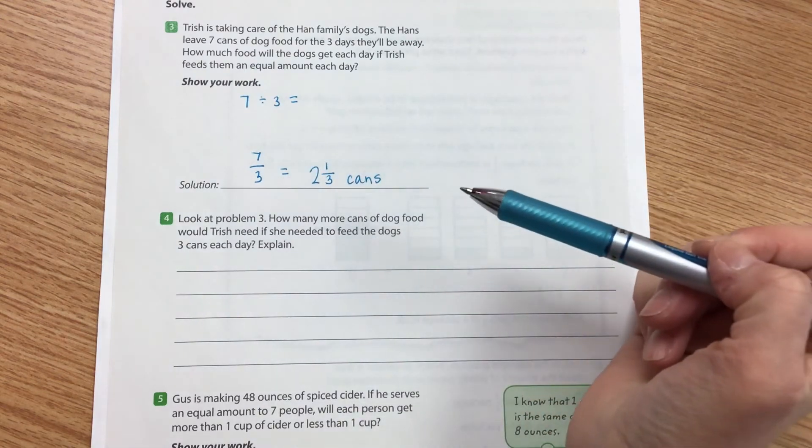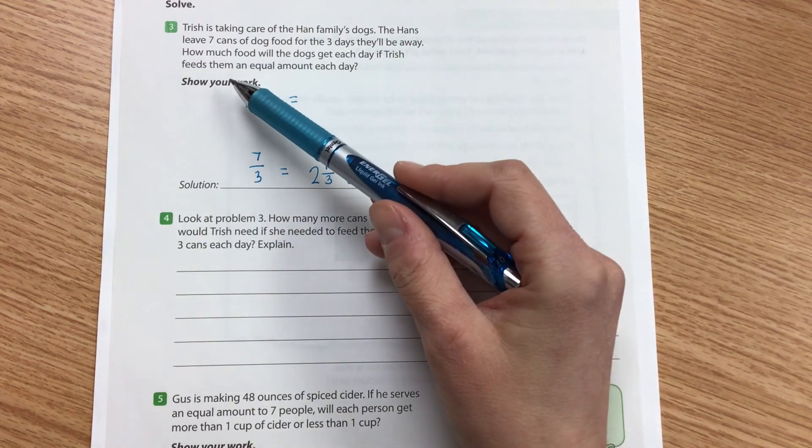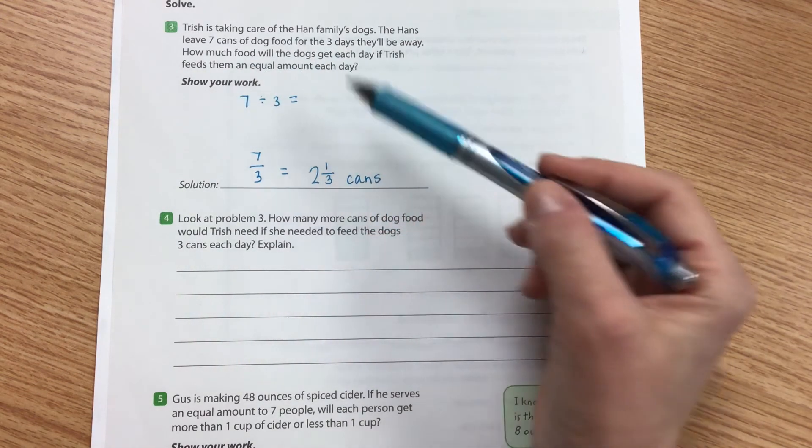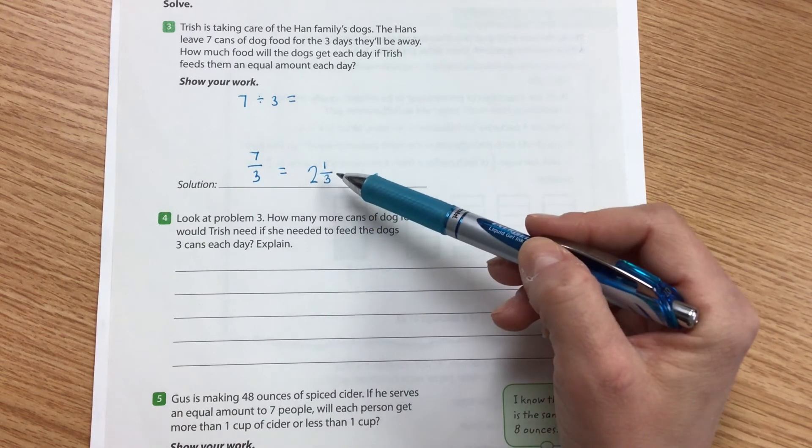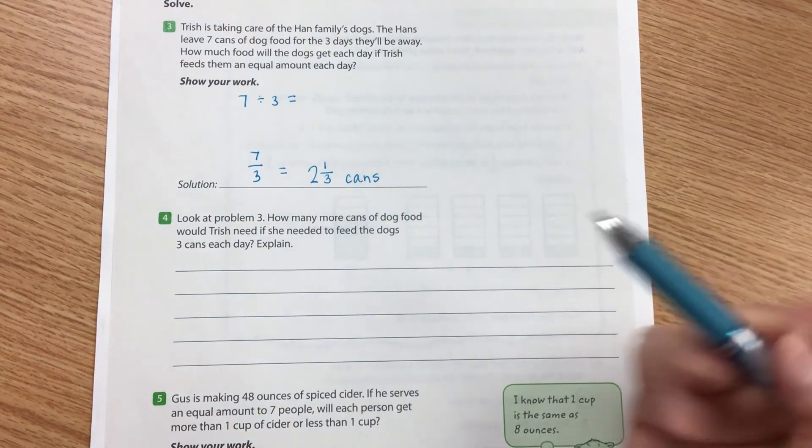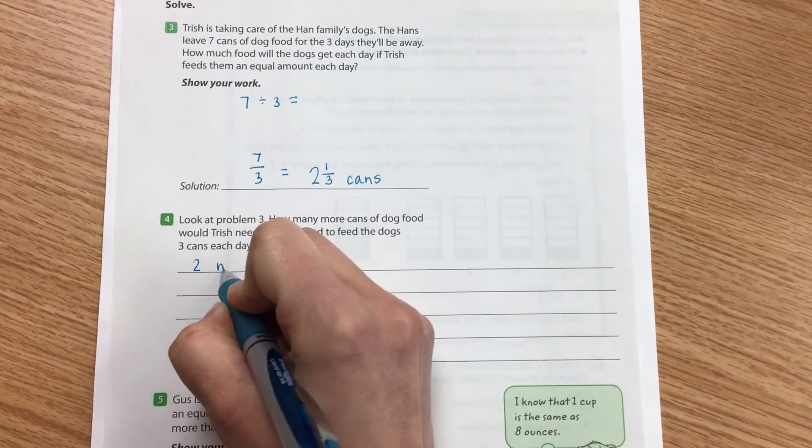So if I know she leaves them seven cans of dog food and they're getting two and a third cans each day, I'm just going to say two more cans.